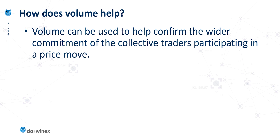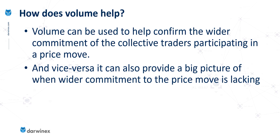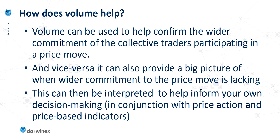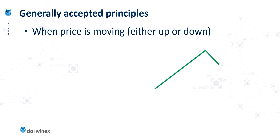So what is it about volume data that can help us? Well, one of the most common uses is to help confirm what the commitment is for the collective traders participating in the price move of a specific asset. But also the converse — it can provide a big picture of when that wider commitment to the price move is lacking. By attempting to interpret this volume information to ascertain the commitment in conjunction with the price action is what gives us that additional dimension of intelligence. Let's look at some of the generally accepted principles of the use of volume data, using this part of the chart where we're currently in a pullback.